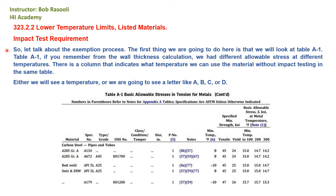The first thing we are going to do is look at Table A1. If you remember from the wall thickness calculation, we had different allowable stress at different temperatures. There is a column that indicates what temperature we can use the material without impact testing in the same table.